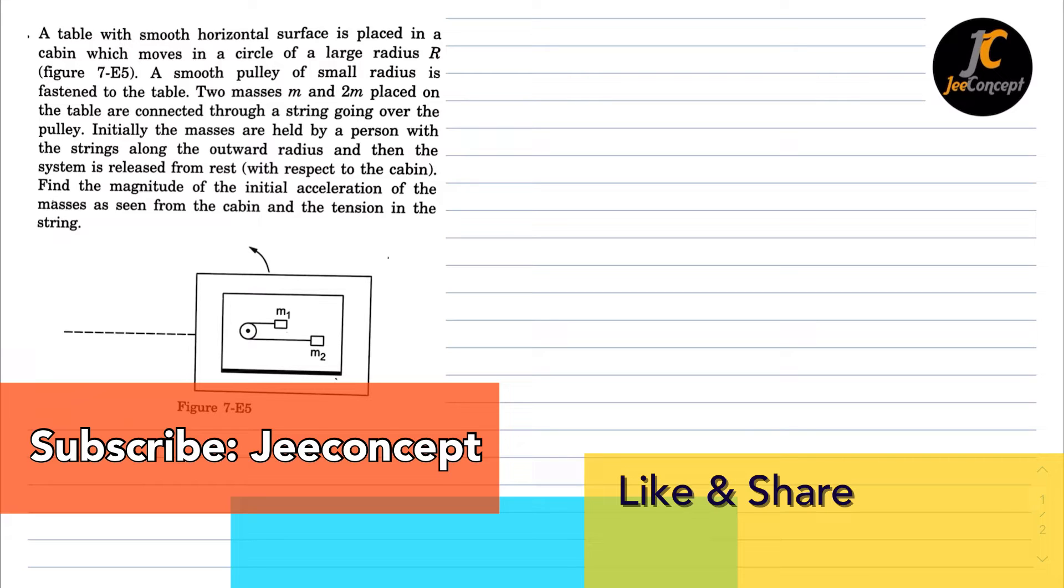Initially, the masses are held by a person with the strings along the outward radius, and then the system is released from rest. Find the magnitude of the initial acceleration of the masses as seen from the cabin and the tension in the string.